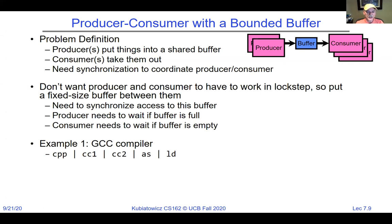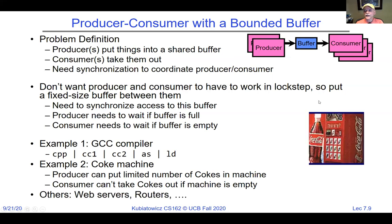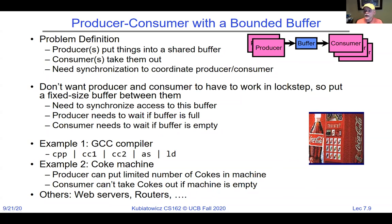A GCC pipeline with pipes is one example where each pipe symbol represents a finite buffer. Another example is a Coke machine with a finite number of slots. When the delivery person shows up and the machine is full, we put them to sleep. When students come and there's no Coke, they go to sleep. Multiple producers might arrive and multiple consumers might try to pull things out. There are lots of examples of finite buffers: web servers, routers, and so on. Busy waiting — shaking the machine until the delivery guy shows up — is considered bad programming style.